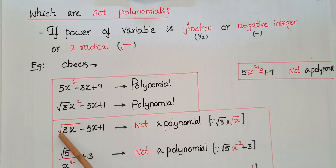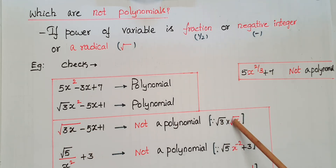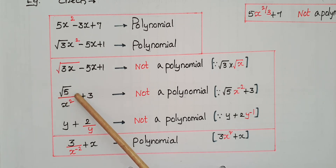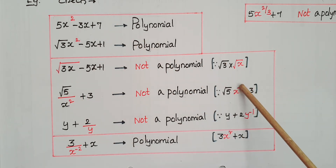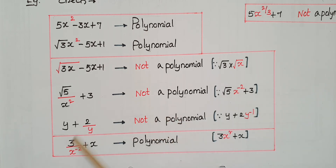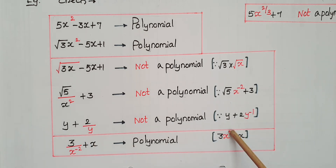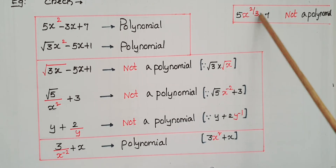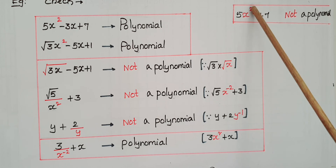Root 3 times root x minus 5x plus 1 is not a polynomial because root 3 into root x means x to the power of 1 by 2, which is a radical. Next, root 5 divided by x square plus 3 equals root 5 times x to the power of minus 2, so the degree is a negative integer — not a polynomial. Similarly, y plus 2 by y has 2 times y to the power of minus 1, degree minus 1, so not a polynomial. However, 3 divided by x to the power of minus 2 plus x can be written as 3x square plus x, where the degree is a whole number, so it is a polynomial. But 5 times x to the power of 2 by 3 plus 7 has degree 2 by 3, which is not a whole number, so it is not a polynomial.